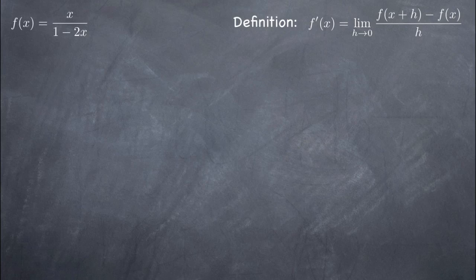You can see that the definition has more or less two components, f of x plus h and f of x. We already have f of x, it's our original function. To calculate f of x plus h, we'll take all of the x's out of our original equation and put an x plus h in their place.